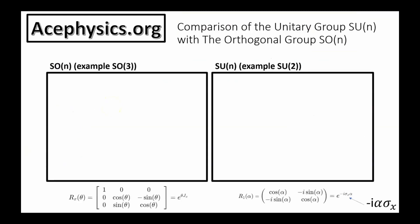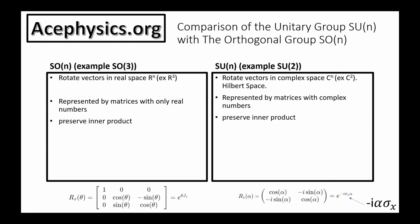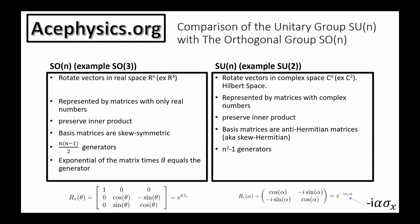Here's a comparison of the unitary group SUN with the orthogonal group SON. SON rotates vectors in real space; SUN rotates vectors in complex space. SON uses matrices with only real numbers; SUN uses matrices with complex numbers. Both preserve the inner product. The basis matrices of SON are skew-symmetric, while the basis matrices of SUN are anti-Hermitian. There are n(n−1)/2 generators of SON and n²−1 generators of SUN. The exponential of basis matrices times theta equals the group generators of SON, while for SUN it is the exponential of basis matrices times i·theta.